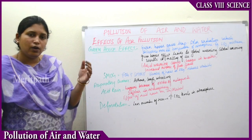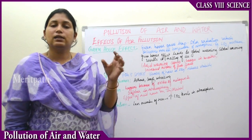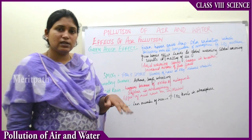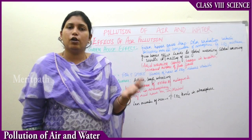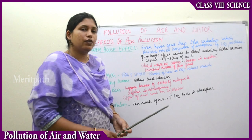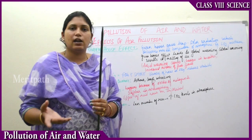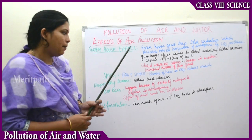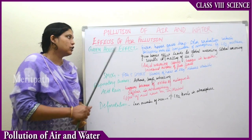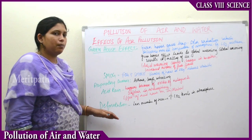The next effect is deforestation. If the number of trees is being cut day by day, there is a decrease in the number of trees. If there is a decrease in trees, there will be an increase in the amount of carbon dioxide in the atmosphere. Deforestation is also an effect of air pollution. These are the effects of air pollution.